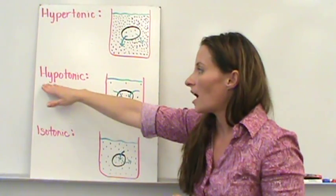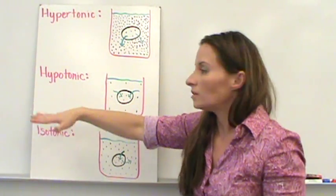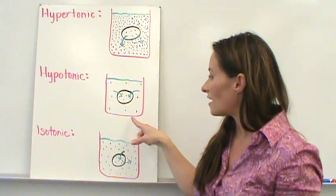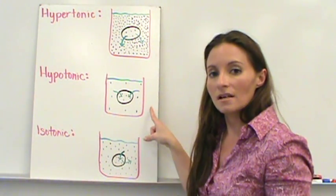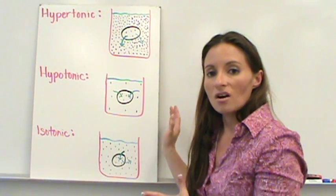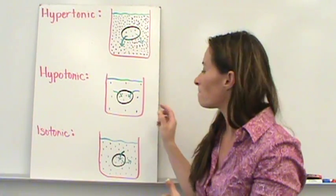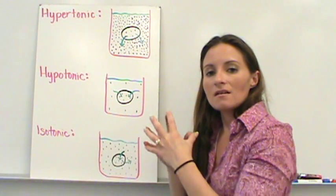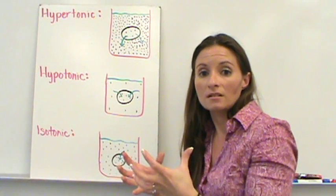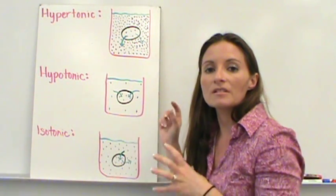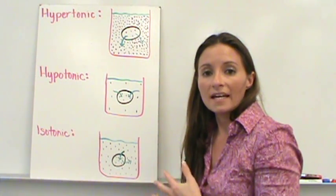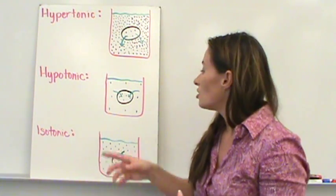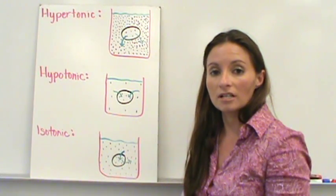A hypotonic solution — hypo meaning less than or below — has less dissolved mineral concentration outside the cell than inside, which means there's more water outside. Less dissolved minerals outside means more water outside. The water will move into the cell, causing it to swell up and eventually burst. This is what happens if you take a saltwater fish or plant and put it in a freshwater tank — it would actually kill your fish.